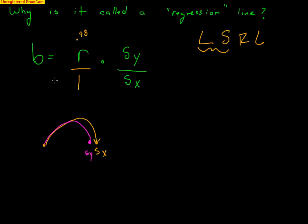Every time X goes up one standard deviation, Y goes up R standard deviations — or down if the slope is negative. For example, if X goes up two standard deviations and R is 0.98, Y goes up 2 times 0.98 equals 1.96 standard deviations, falling further behind. If R is lower, like 0.60, Y regresses even further behind X. So there is a clear connection between the standard deviations of X and Y and the value of R.